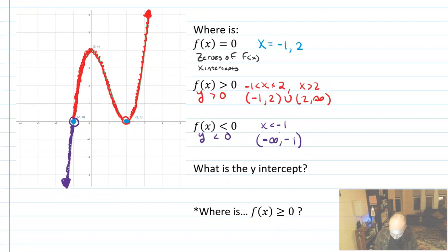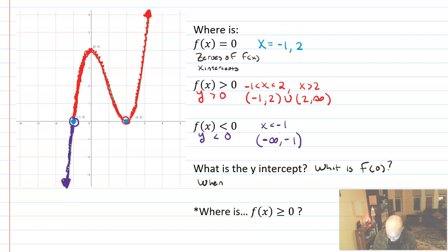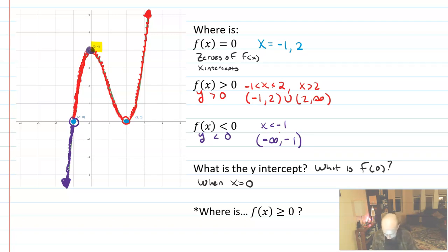The last question asks, what is the y-intercept? It might also ask what is f of zero, because these are actually the same question. The y-intercept happens when x equals zero. I can observe that at the point zero comma four is where it intercepts the y-axis. So I would say the y-intercept is at y equals four, or as the coordinate zero comma four.